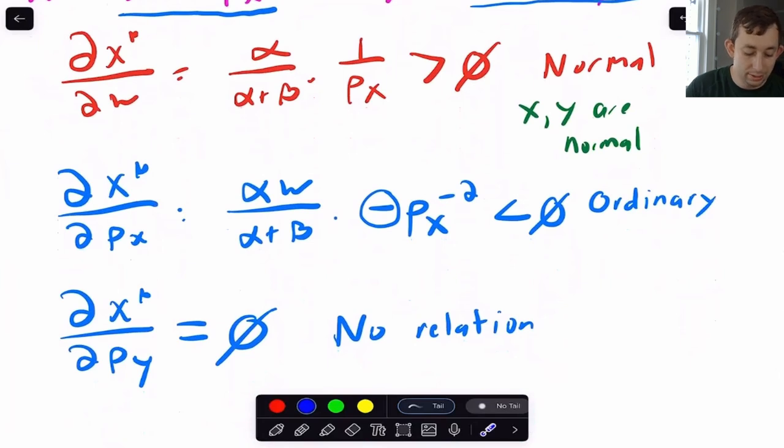And then for the own price elasticity, we're going to be right here. So again, I've just taken the derivative. px is in the denominator, and so when I take that derivative, I get this negative guy right here, which means automatically my sign is going to be negative, so I'm dealing with an ordinary good.